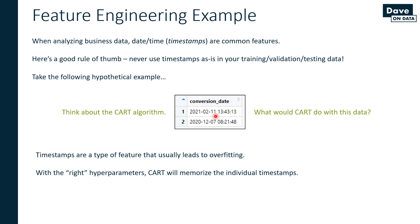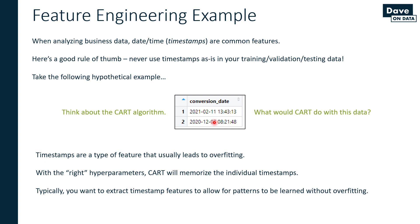You want to typically extract timestamp features to allow for patterns in the timestamp data to be learned by the algorithm, but in such a way that it does not make the algorithm overfit to these representations. A key idea in feature engineering is extracting the representations that embody patterns in the data while simultaneously avoiding overfitting. Timestamps are a great example of this because everyone in the world is familiar with these types of patterns — everybody has domain expertise in the concepts of dates and times.